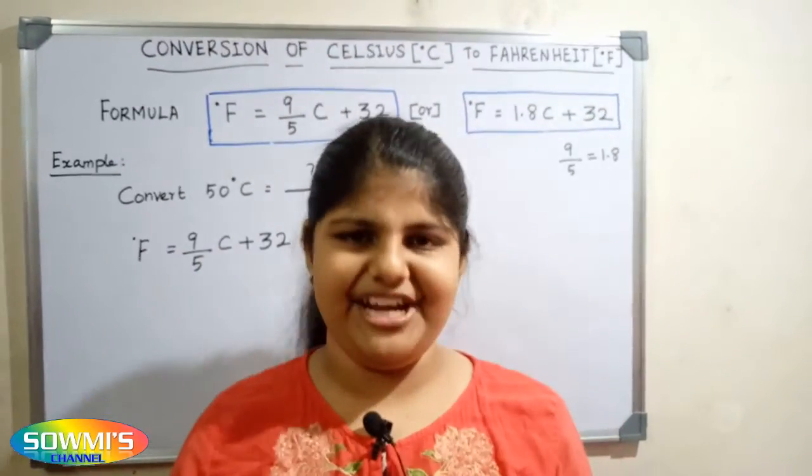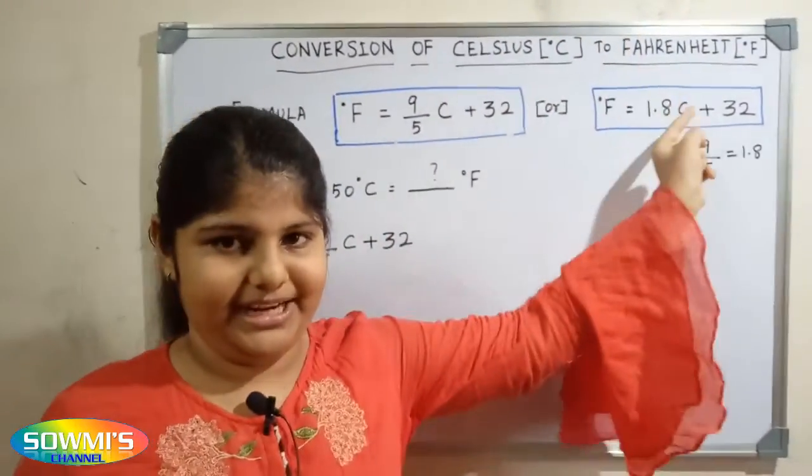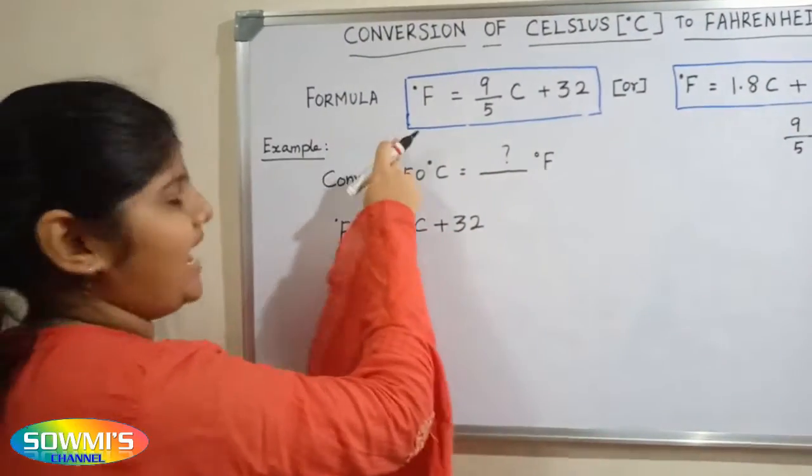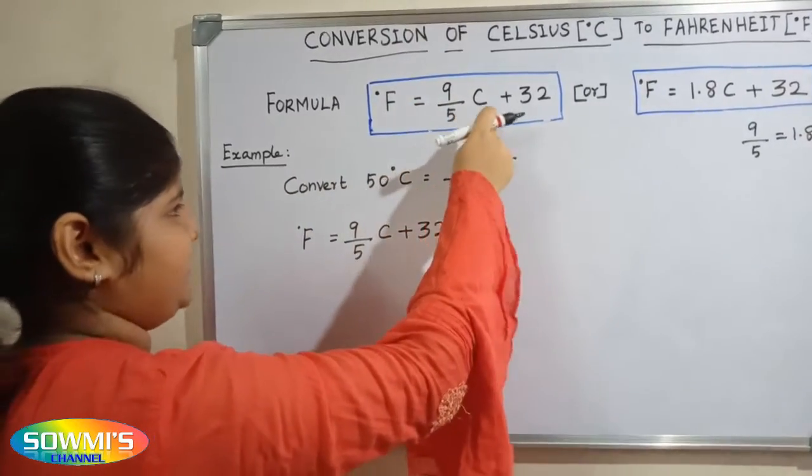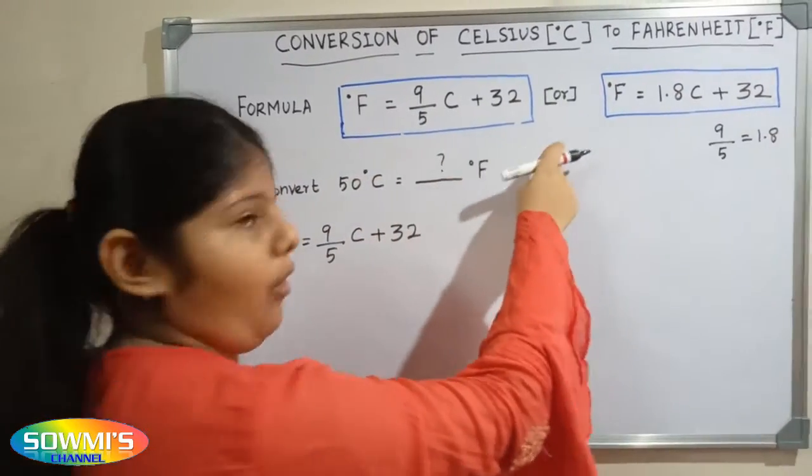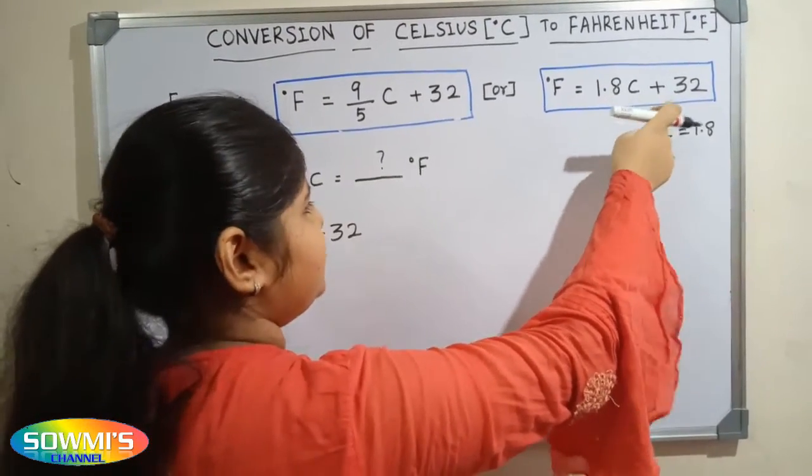Hi friends, in this video we are going to see conversion of degree Celsius into degree Fahrenheit. Formula is degree Fahrenheit is equal to 9 by 5 multiply Celsius plus 32, or degree Fahrenheit is equal to 1.8 multiply Celsius plus 32.